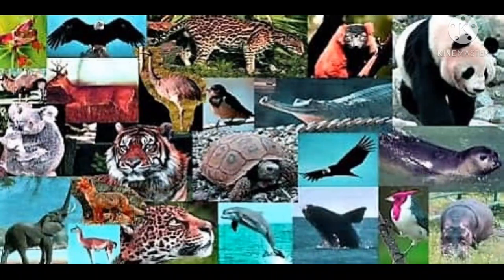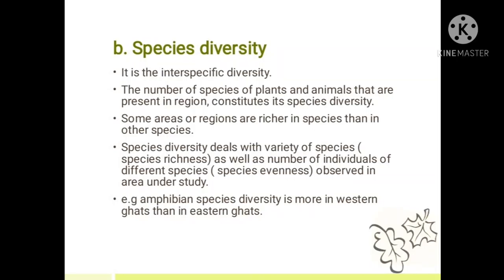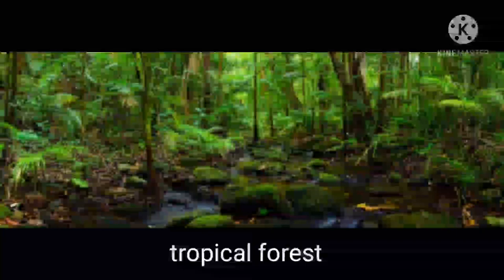Species diversity is the interspecific diversity. It refers to the number of species of plants and animals present in a region. Some areas are richer in species than others. Species diversity deals with variety of species — that is species richness — as well as the number of individuals of different species, known as species evenness. For example, amphibian species diversity is more in the Western Ghats than in the Eastern Ghats.